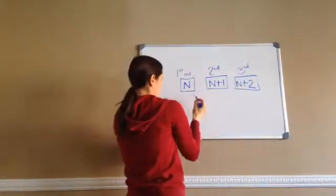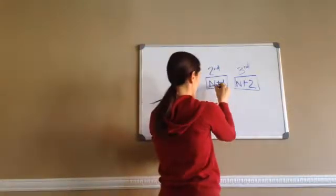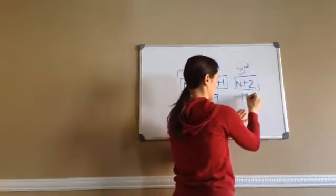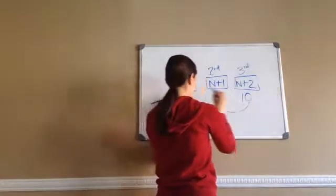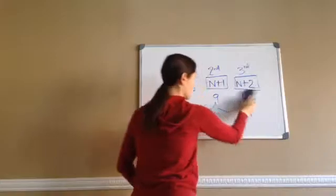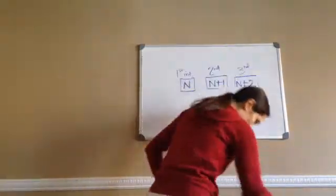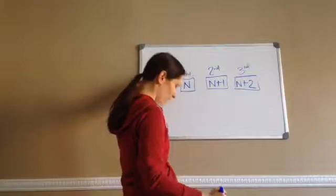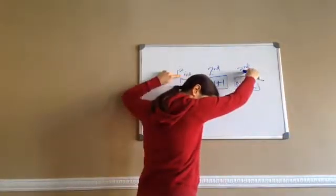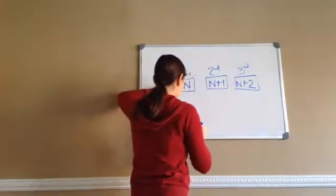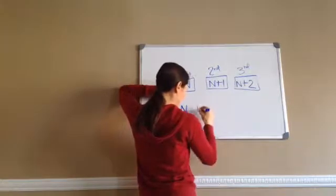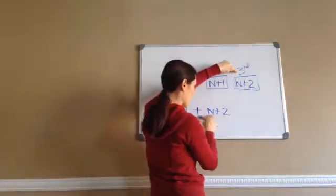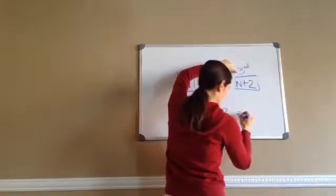I can put any number — let's say I chose 8. 8 as n, then my second integer would be 8 plus 1, which would be 9, and my third integer would be 8 plus 2, which would be 10. So I'm doing good because I'm keeping them consecutive. My first, second, and third. Now listen to the problem: find 3 consecutive integers such that the sum of the first and third integer is 146. The first and the third — we want the sum of those two — is 146.